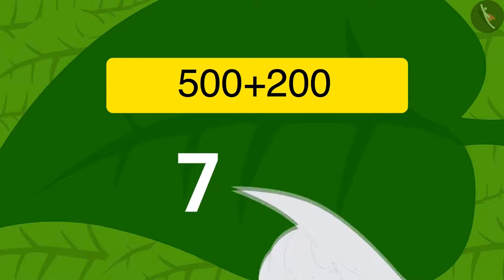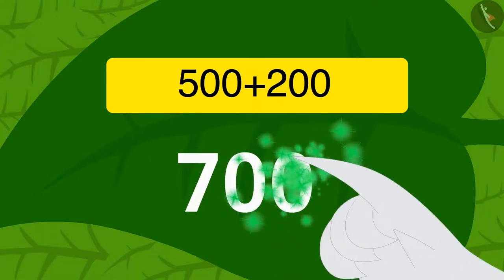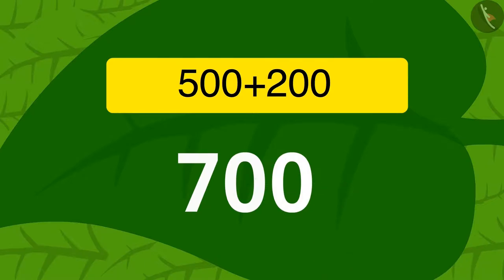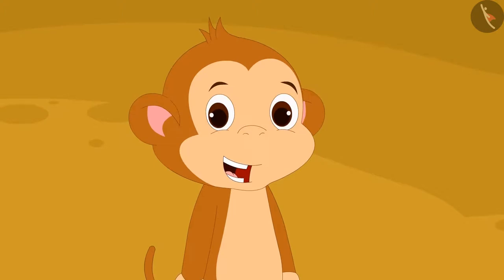Like what Meenu did, uncle too wrote the answer to the riddle, 700, on the vine leaf with his finger. And then again, the vine sunk into the ground and got shorter. Baboon started solving the next riddle after seeing uncle and Meenu doing this.